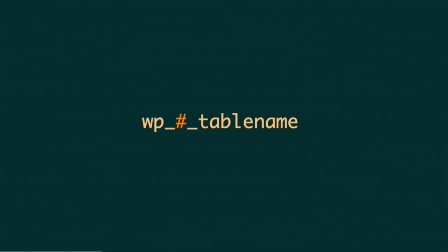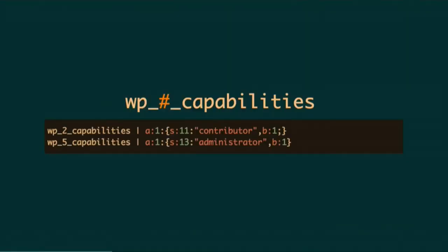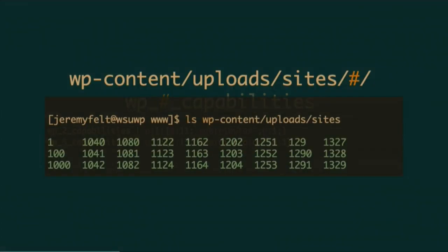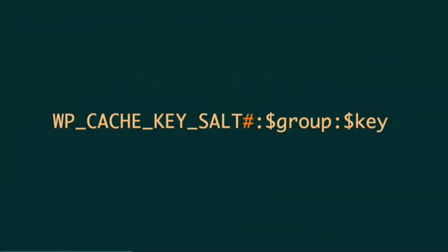This is all figured out based on the site ID — also known as blog ID, and we'll cover some of the naming here in a bit. By default, the tables will have wp_siteID_tablename. The same thing happens with capabilities in the user meta table — users can have different capabilities per site. So on site two it would be wp_2_capabilities and I might be a contributor, while on site five I might be an administrator. The same thing happens in the uploads directory — under sites, every individual site has its own directory with its ID number. And if you're using object caching, the same thing happens with your cache groups, so the ID is part of the key built to store the information.